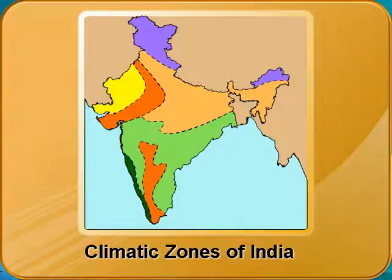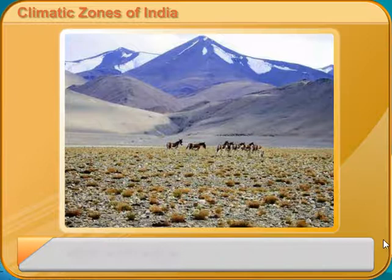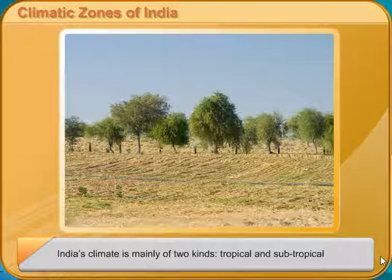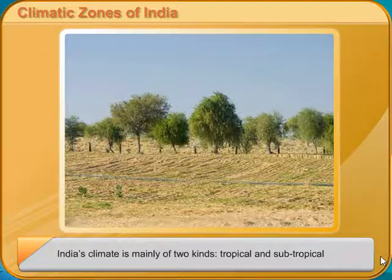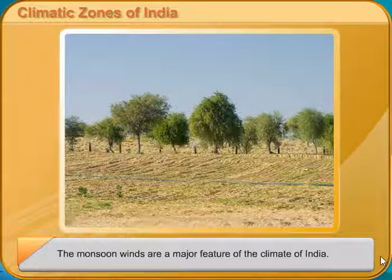Climatic Zones of India. India is a large country with different geographical features, so all parts of the country do not have the same climate. India's climate is mainly of two kinds: tropical and subtropical. The monsoon winds are a major feature of the climate of India.